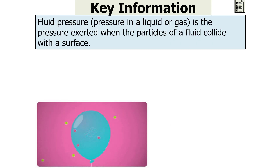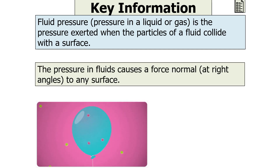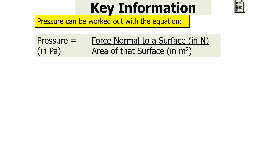To clarify: fluid pressure, which is pressure in a liquid or a gas, is the pressure exerted when the particles of a fluid collide with a surface or a container, and the pressure in the fluid causes a force normal to any surface. We can work out the pressure with the following equation: pressure in pascals is equal to the force normal to a surface in newtons divided by the area of that surface in metres squared.